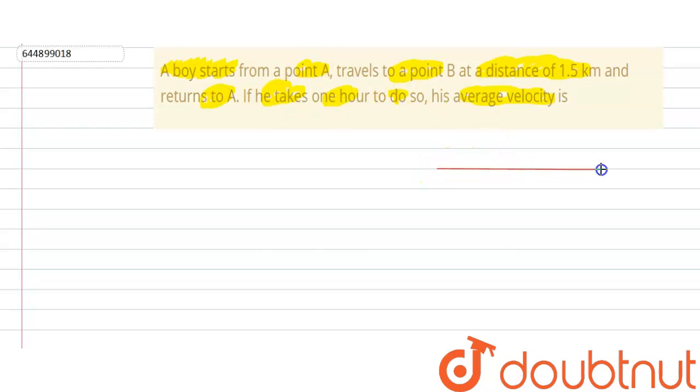A boy goes from point A to point B. So this is our point A and this is our point B. How much distance is given to us? 1.5 km.